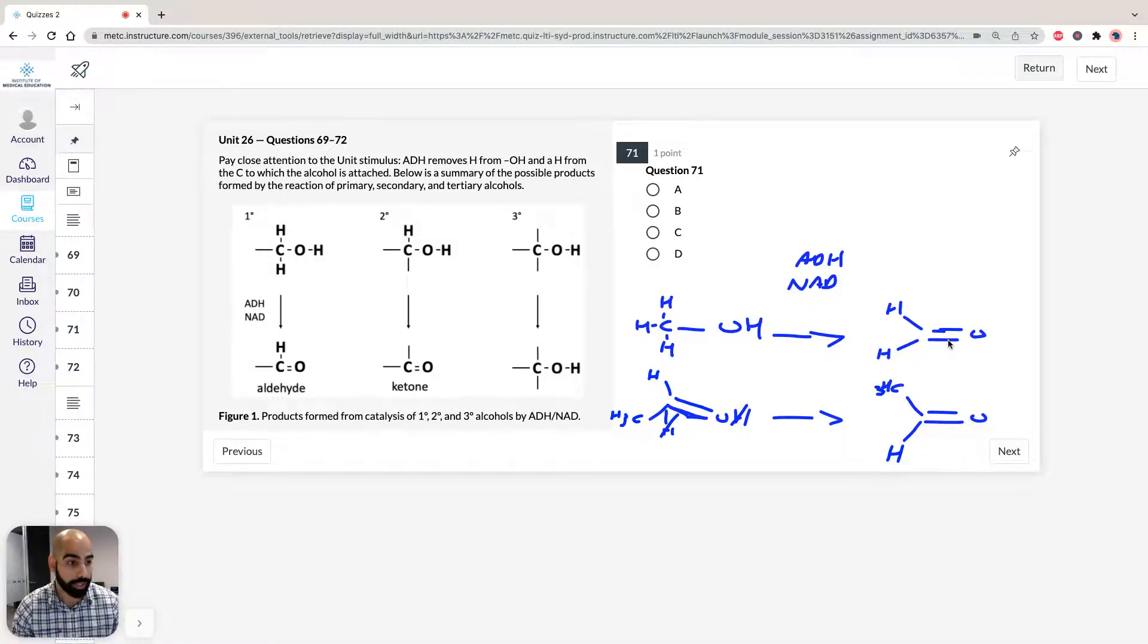If we take a look at the options, we're told we're going to form a formaldehyde for methanol. Correct. And for ethanol, we're going to form an acetaldehyde. So they're both aldehydes. Correct. Remember, because for it to be a ketone, these would both have to be carbon, but because it's one carbon and one hydrogen, it's still aldehyde. So the answer for 71 therefore is D. Both statements are correct.